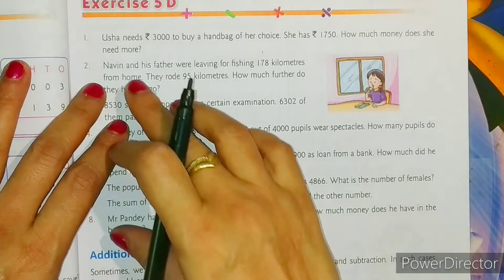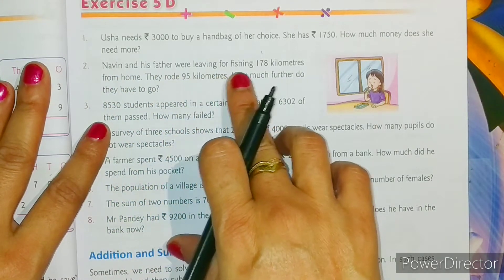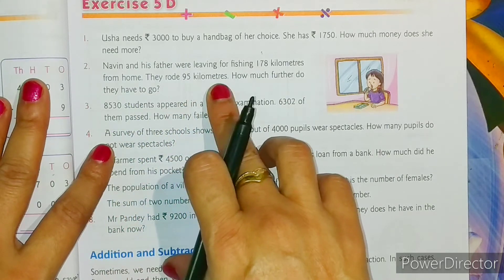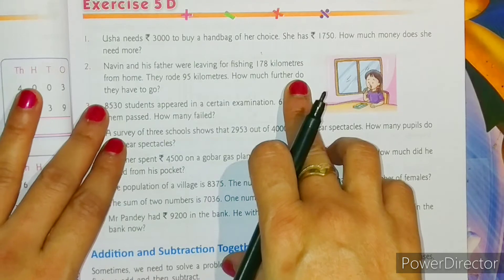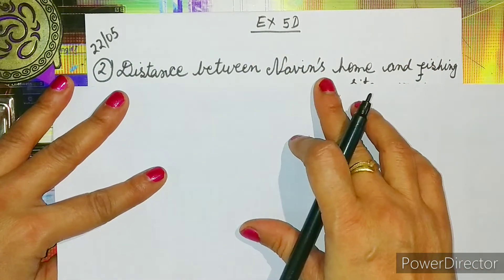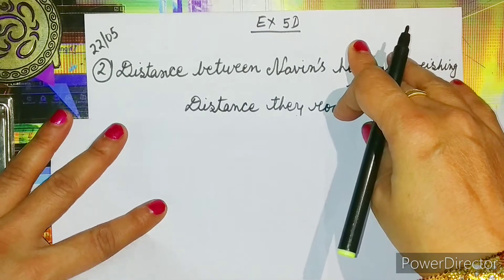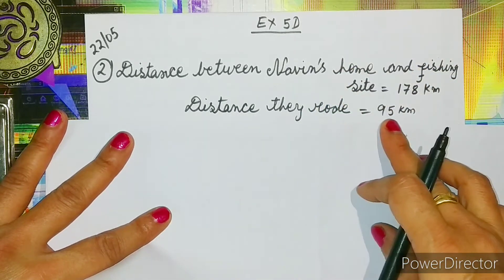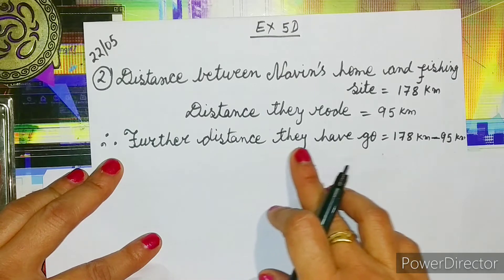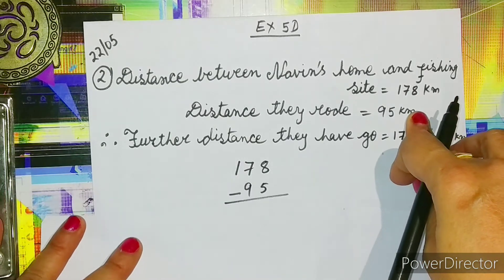Now let's move on to question number two. The question says: Naveen and his father were leaving for fishing, 178 kilometers from home. They rode 95 kilometers. How much further do they have to go? Let us solve question number two. The first statement is: the distance between Naveen's home and the fishing site is equal to 178 kilometers. The second statement is: the distance they rode is equal to 95 kilometers. Therefore, the further distance they have to go is equal to 178 kilometers minus 95 kilometers.